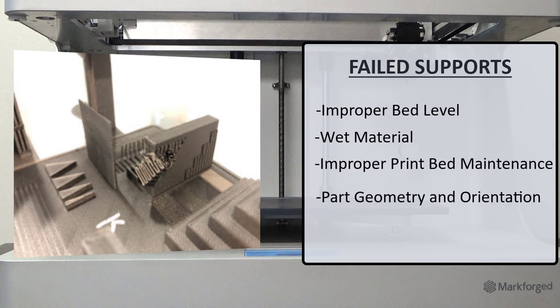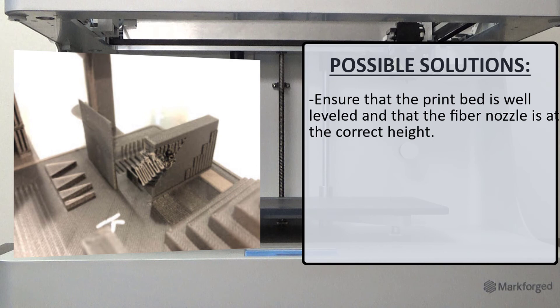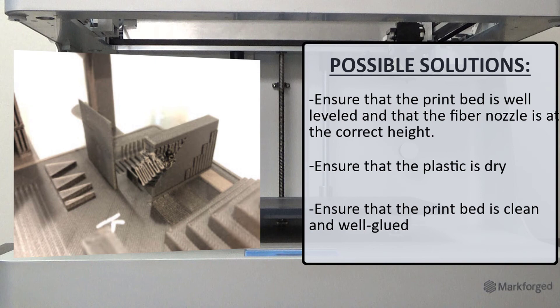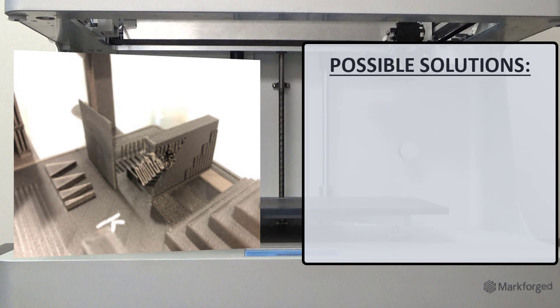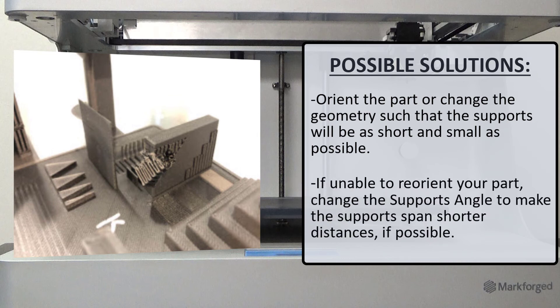Some recommended troubleshooting steps would be to ensure that our print bed is well leveled and that the fiber nozzle is at the correct height, ensure that we have dry plastic, and ensure that our print bed is clean and well glued. We can orient the part or change the geometry such that the supports will span short and small distances if possible. If we are unable to reorient the part, we can change the support angles to make the support span shorter distances.